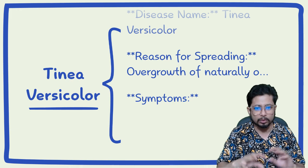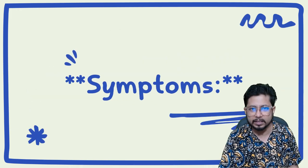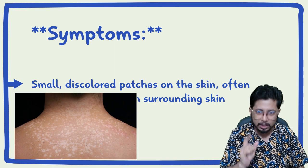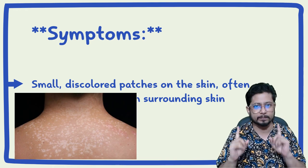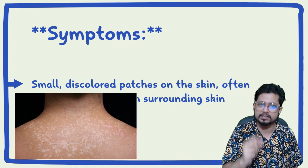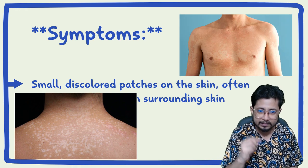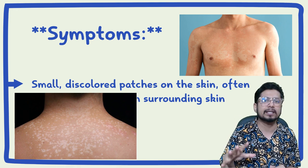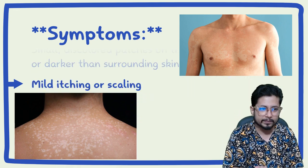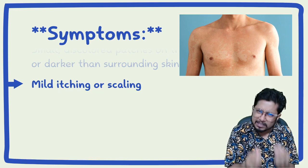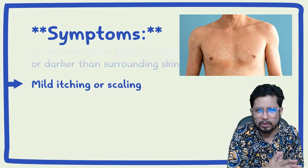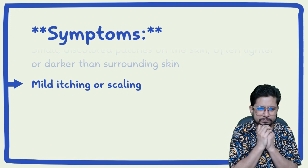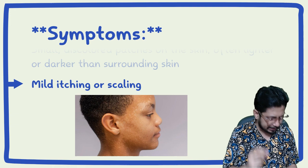The symptoms of Tinea Versicolor include small discolored patches on the skin, often lighter or darker than the surrounding skin — you can clearly distinguish between normal skin color and the color of these patches. Itching is associated with most fungal infections, so mild itching is present, along with mild scaling that is also visible.